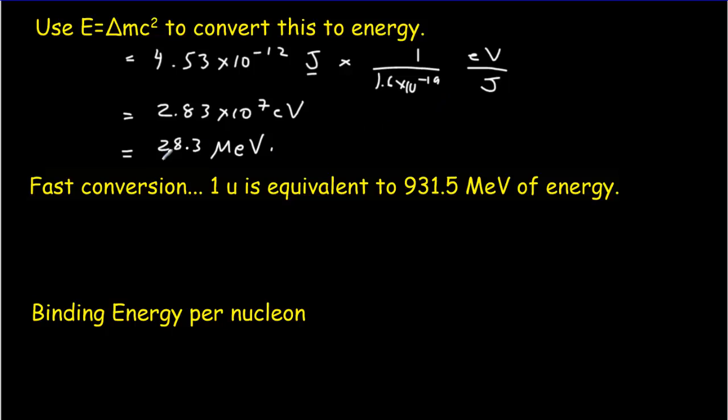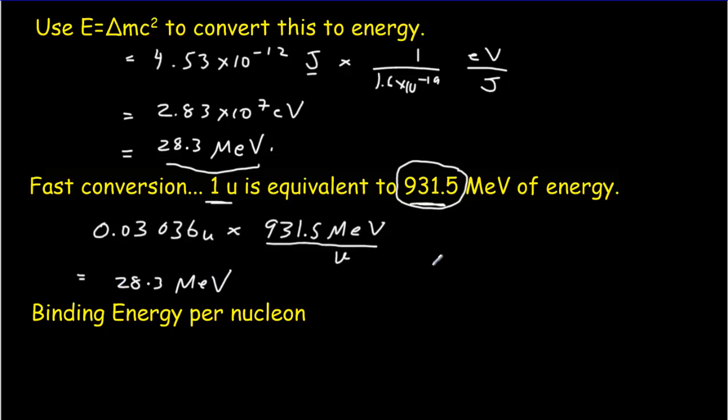Now, that was a lot of work, getting that 28.3 MEVs. So let me show you the fast way of doing it. This number here, 931 MEV of energy, one atomic mass unit is equivalent to 931.5 MEVs of energy. And so the fast way to do this question is just to take your number of atomic mass units, which was 0.03036. And you multiply it by this conversion factor. So you multiply by 931.5 MEVs per atomic mass unit. And when you do that, you'll get 28.3 MEVs. So here's the fast way of doing it. Just use this conversion factor, which will convert your masses from atomic mass units into MEVs of energy.